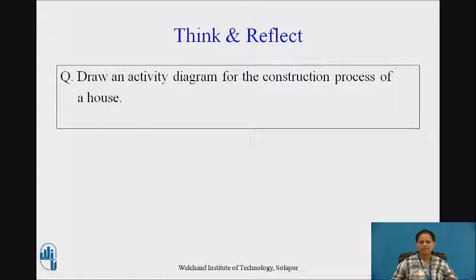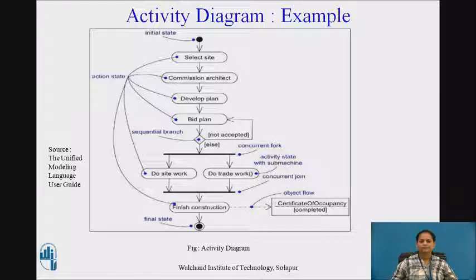Here is the answer. We start with an initial state which changes to select site followed by commission architect, develop plan, bid plan which has a branch. If not accepted, it again changes to the same action state labeled as bid plan. Otherwise, it changes to do site work and do trade work which are the two folks created which are next joined into finish construction